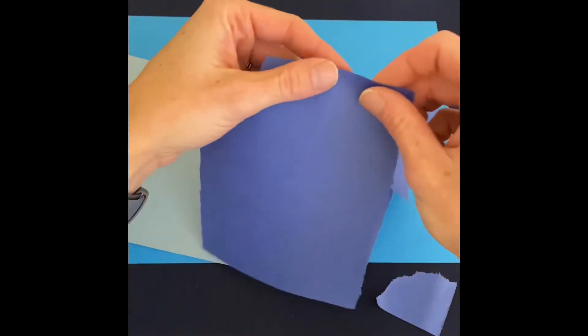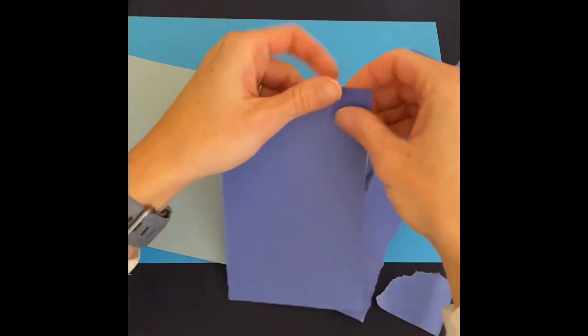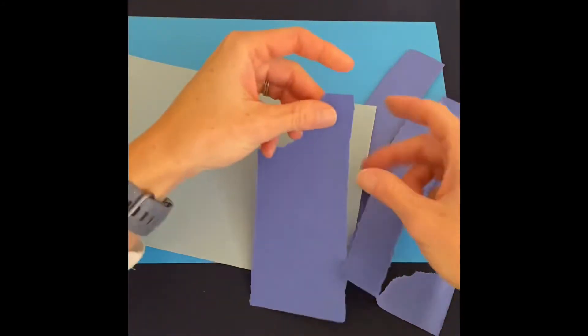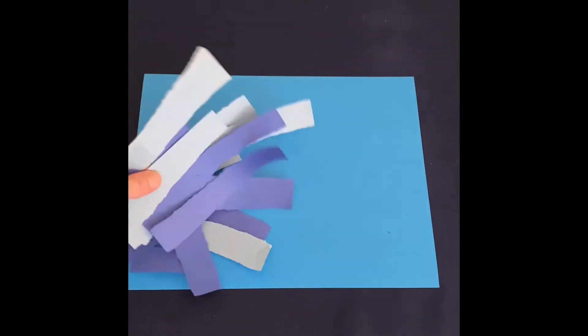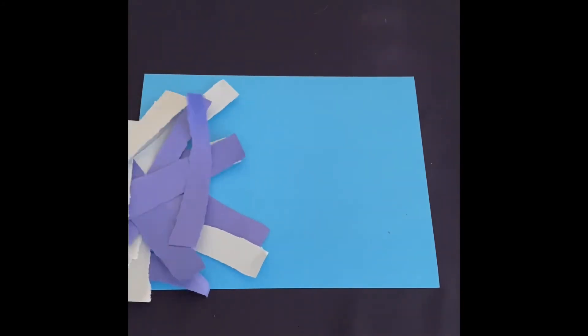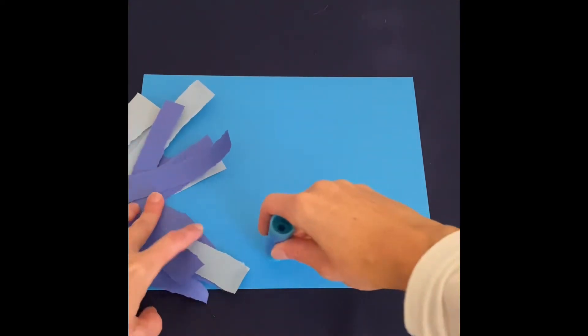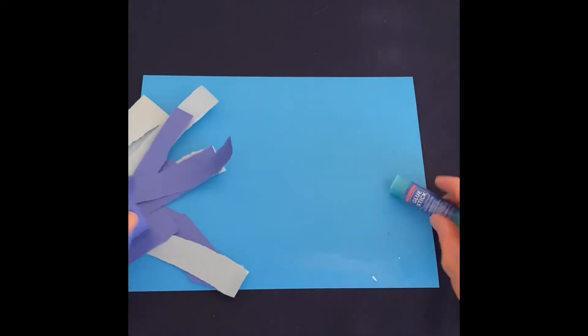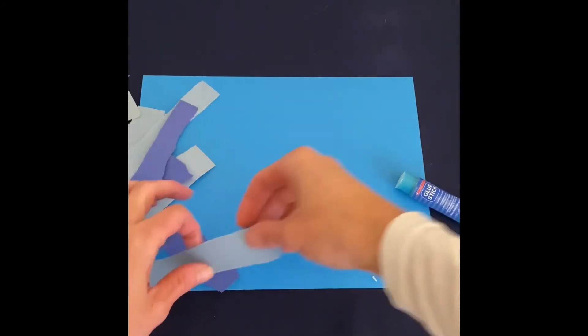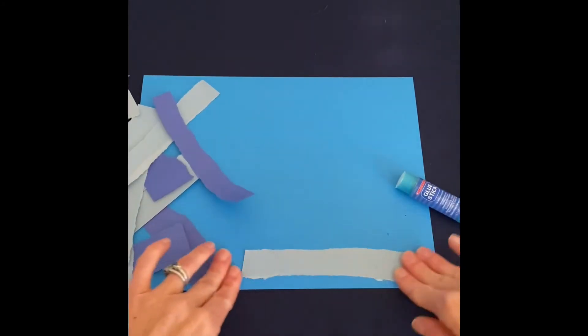I'm going to keep tearing that way into some pieces. Then I'll do the next one. I have my pile of all my little papers that I tore up and what we're going to do is use these to make some waves along the ocean. So I'm going to put some glue down here and then stick on some of my papers.